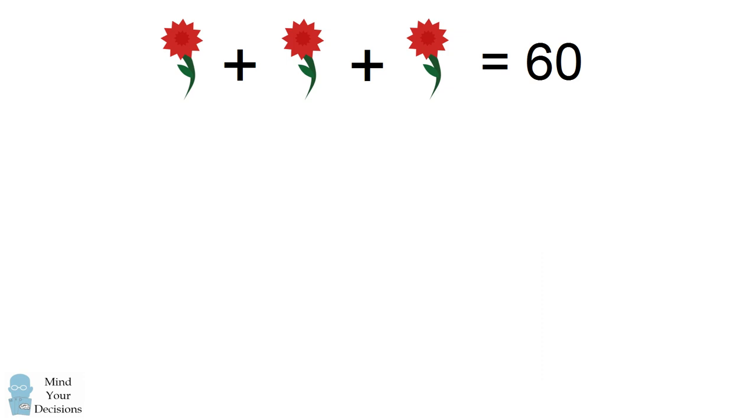The first equation has three red flowers equal 60. This means one red flower is equal to 20.